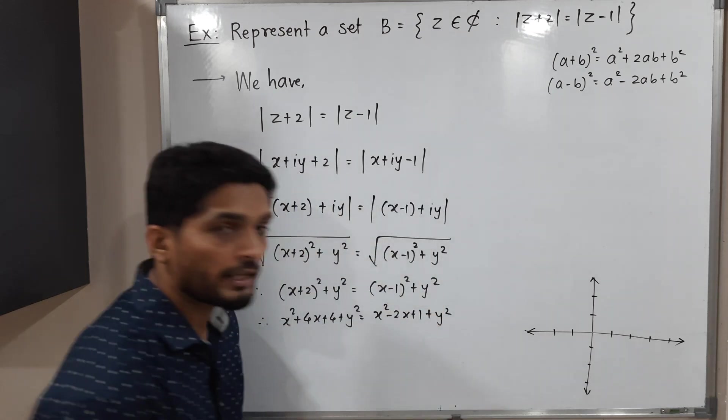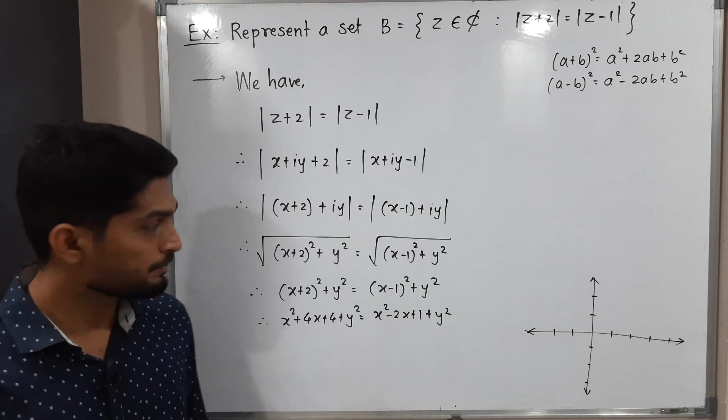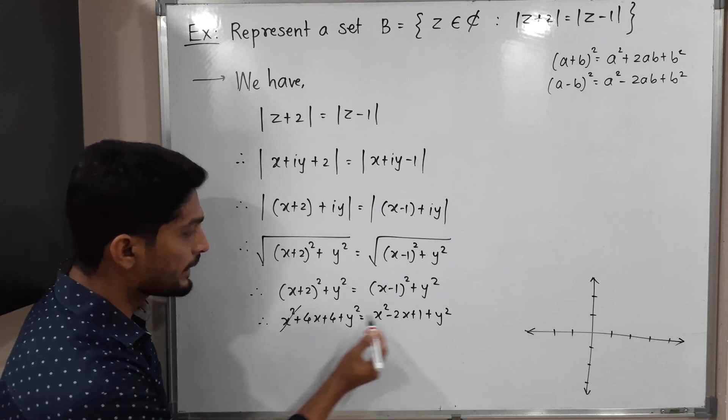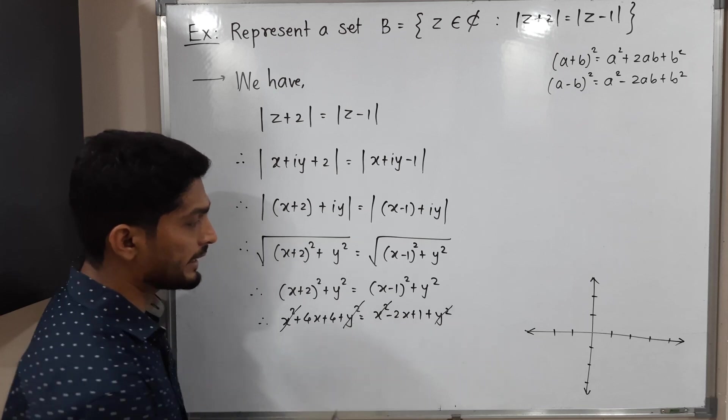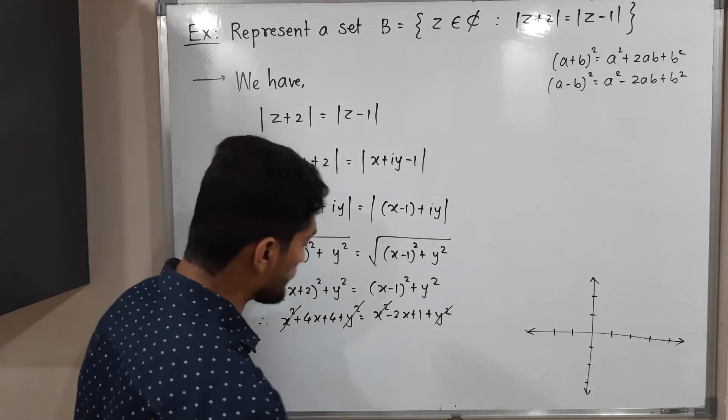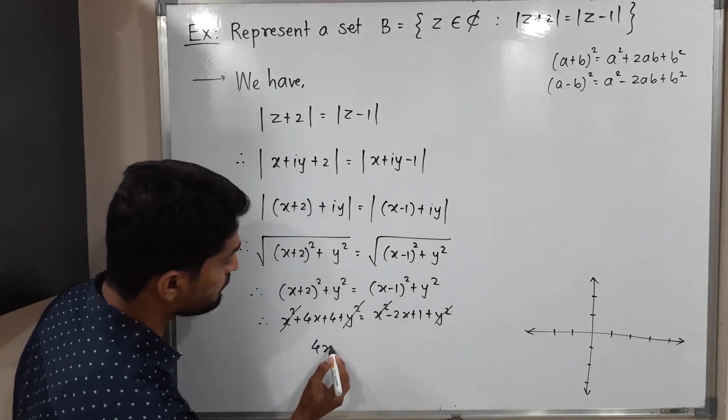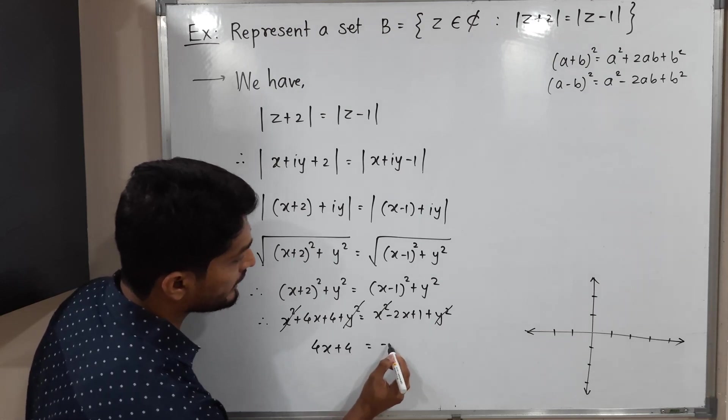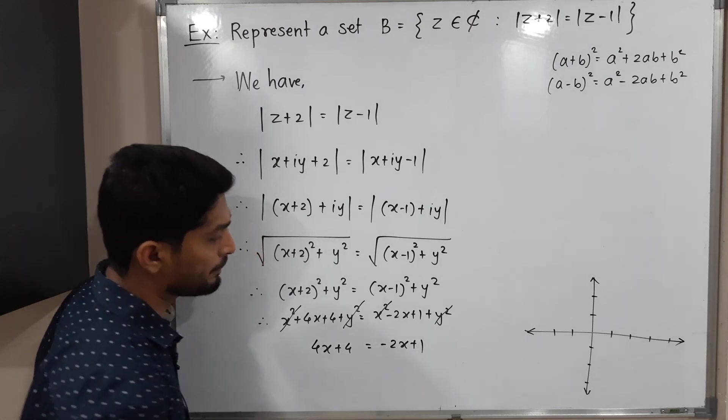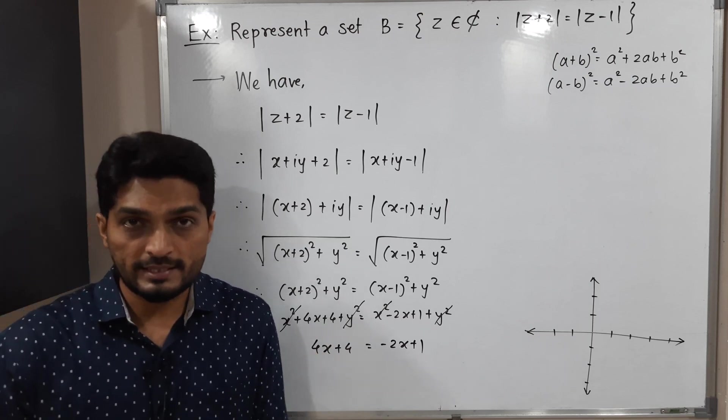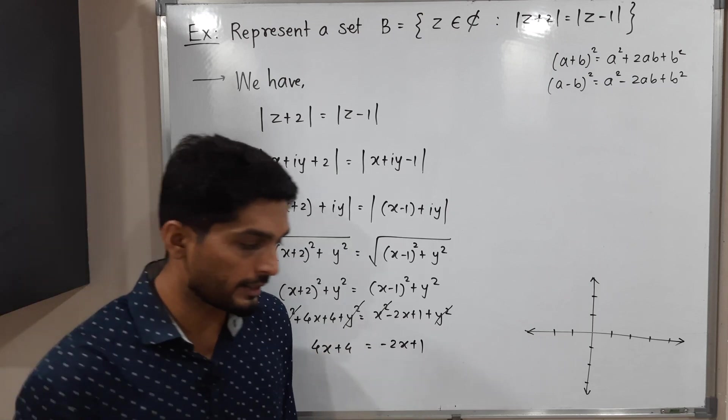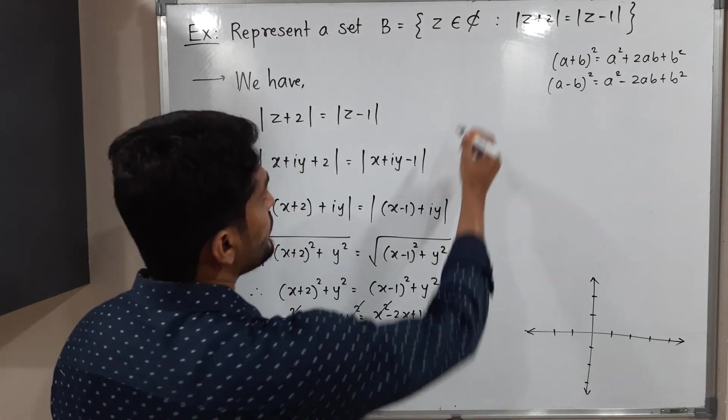So now tell me what can we cancel from both sides. x square x square will get cancelled from both sides. y square y square will get cancelled right. So the remaining terms are here in left hand side 4x plus 4 in right hand side minus 2x plus 1. So let us collect all terms of x on one side and constants on another side.